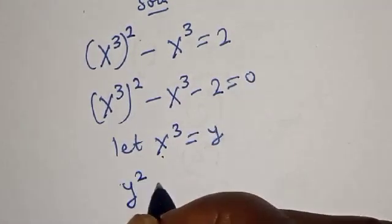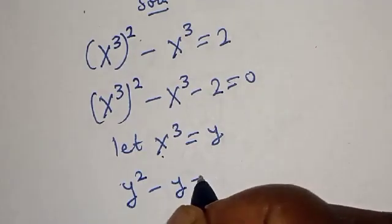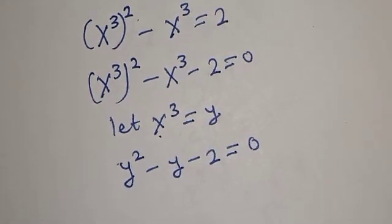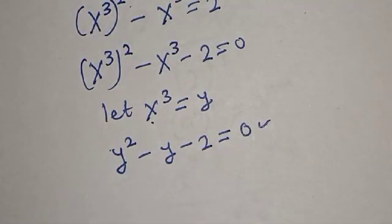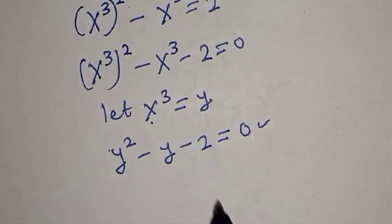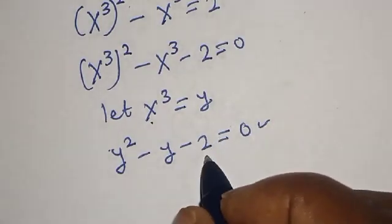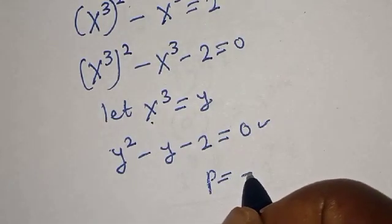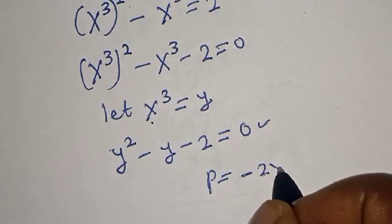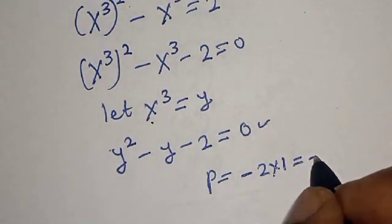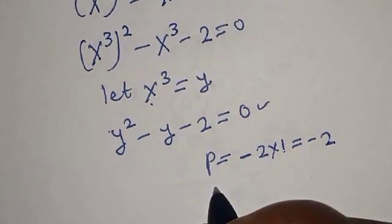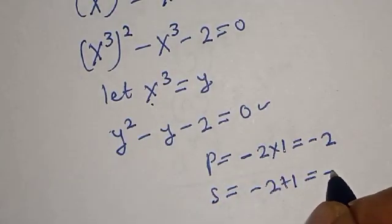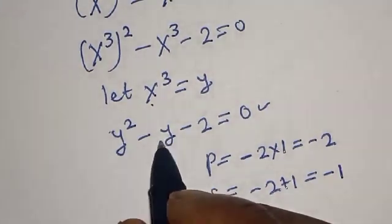We have y squared minus y minus 2 is equal to 0, and this is a quadratic equation. Let's solve this using the factorization method. The product is equal to minus 2 multiplied by 1, which equals minus 2.